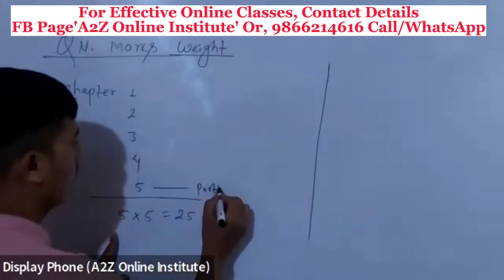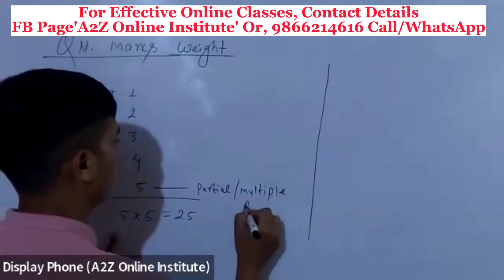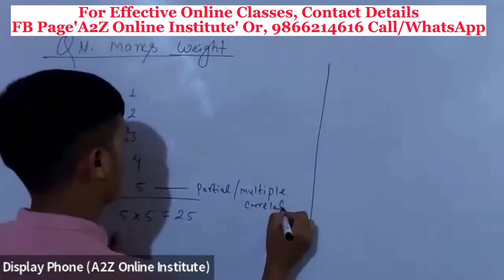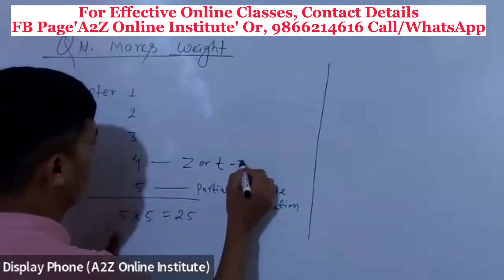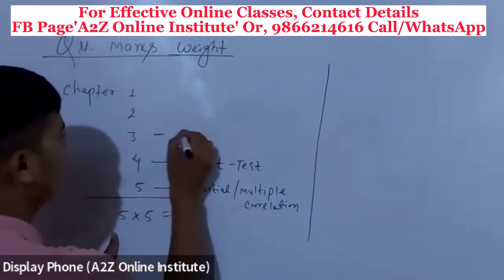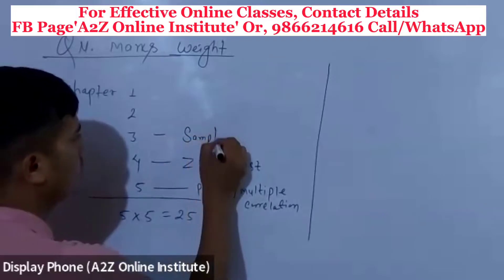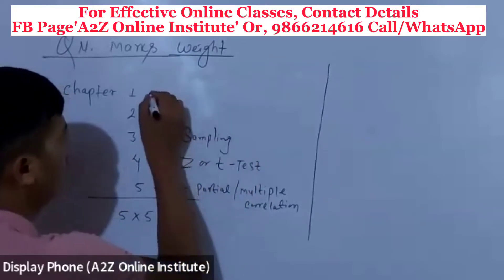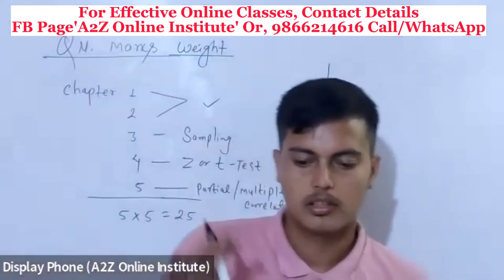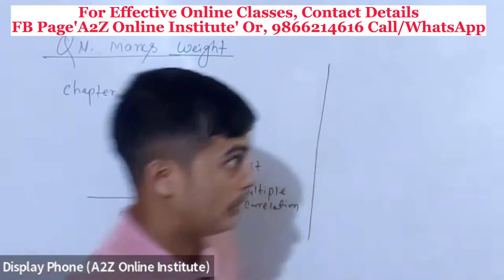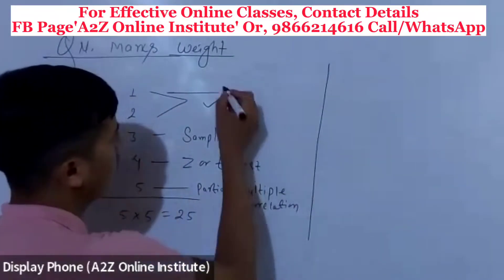Partial or multiple correlation, Chapter 4 — Z or TTS. 3. Sampling: 2, 1, 2, 2. 1, 2, 2, 2. Conditional probability.